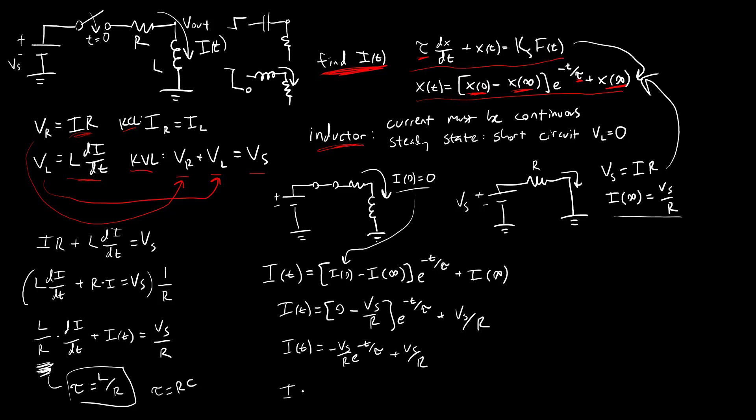We can factor out the Vs over R. So that is equal to Vs over R times one minus e to the negative T over tau where tau equals L over R.